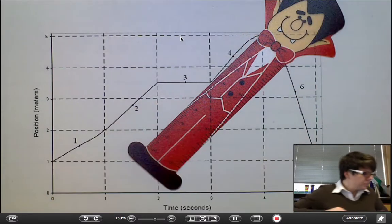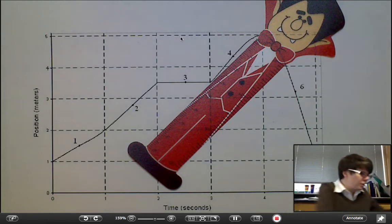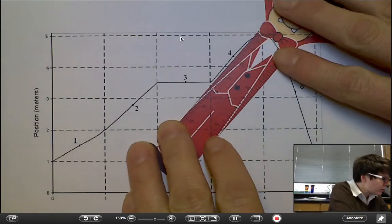Do you notice the slope at four would appear to be somewhat greater than the slope at two? Let's try that the other way and see if we're right.